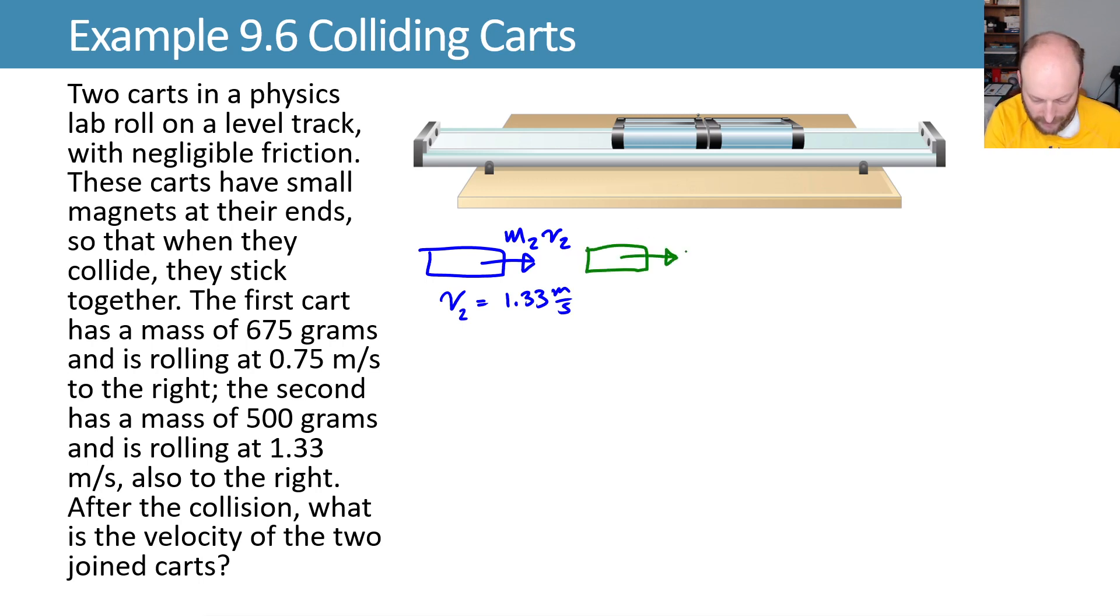Then we have another cart that we'll call cart one, m1, v1, that's rolling with some velocity of 0.75 meters per second. I put two on the left because the first cart is rolling at 0.75, the second one is rolling at 1.33.